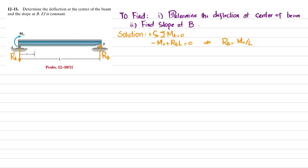Now we find RA using the equilibrium condition that the sum of all forces along the y-direction must equal zero, with upward forces positive. So: negative RA plus RB equals zero. Since RB is M0 over L, we get RA equals M0 over L. Now we have both RA and RB.